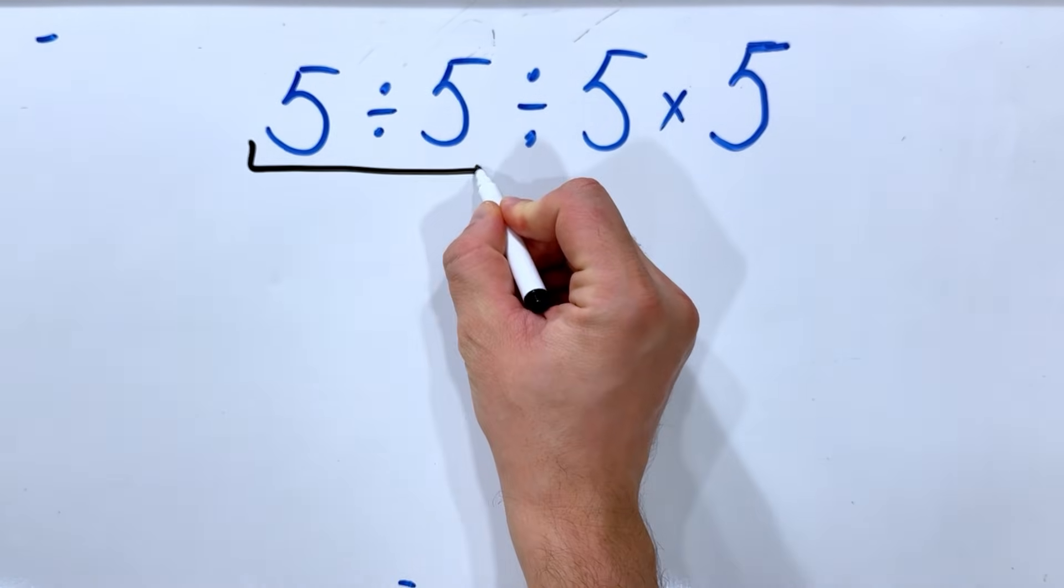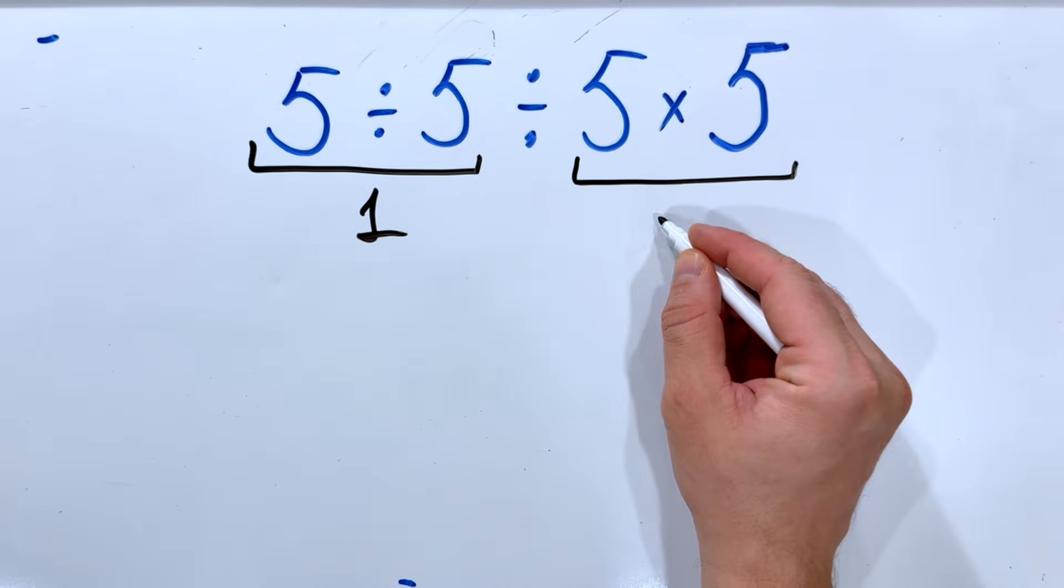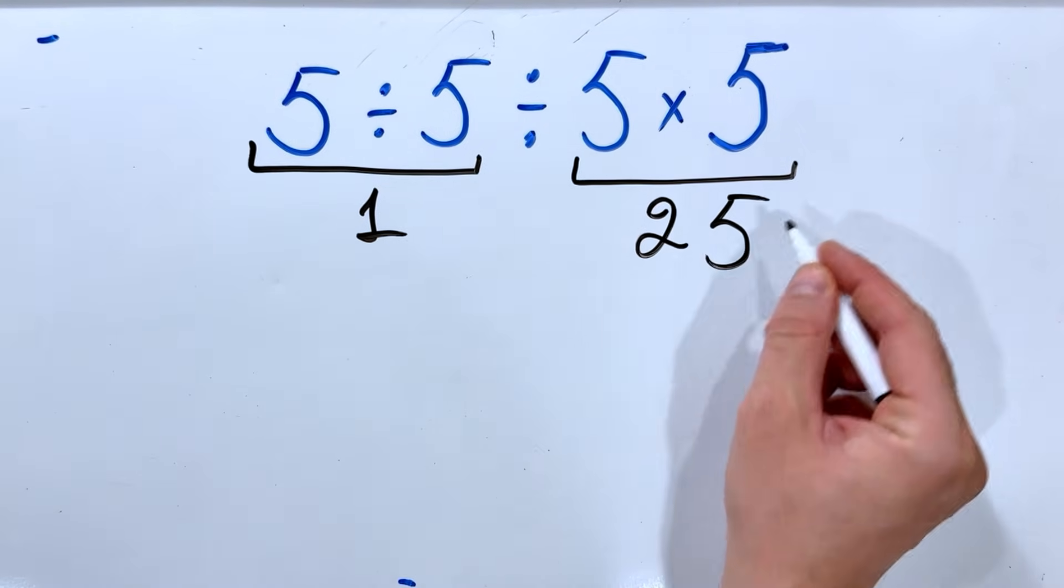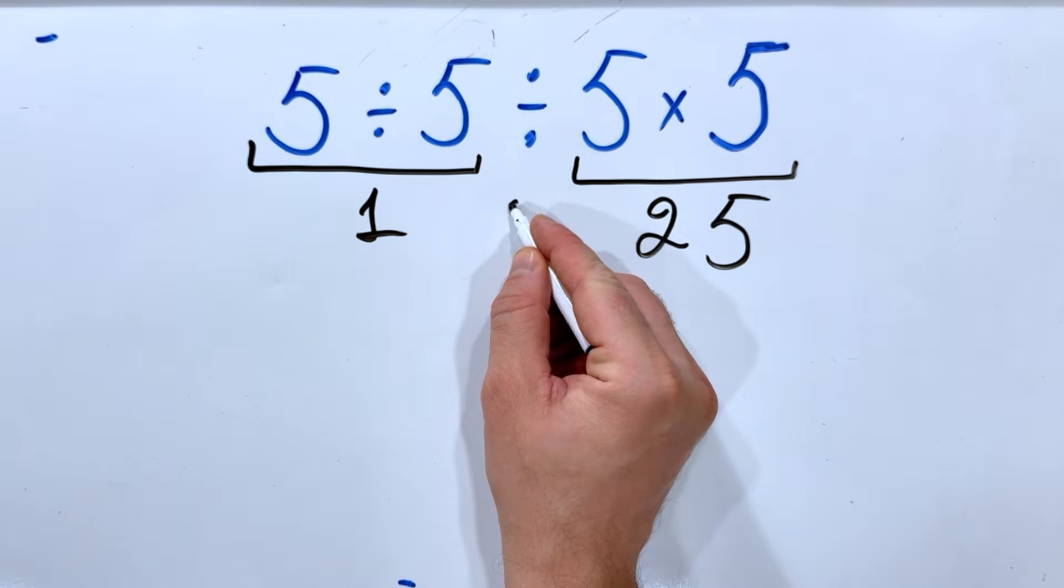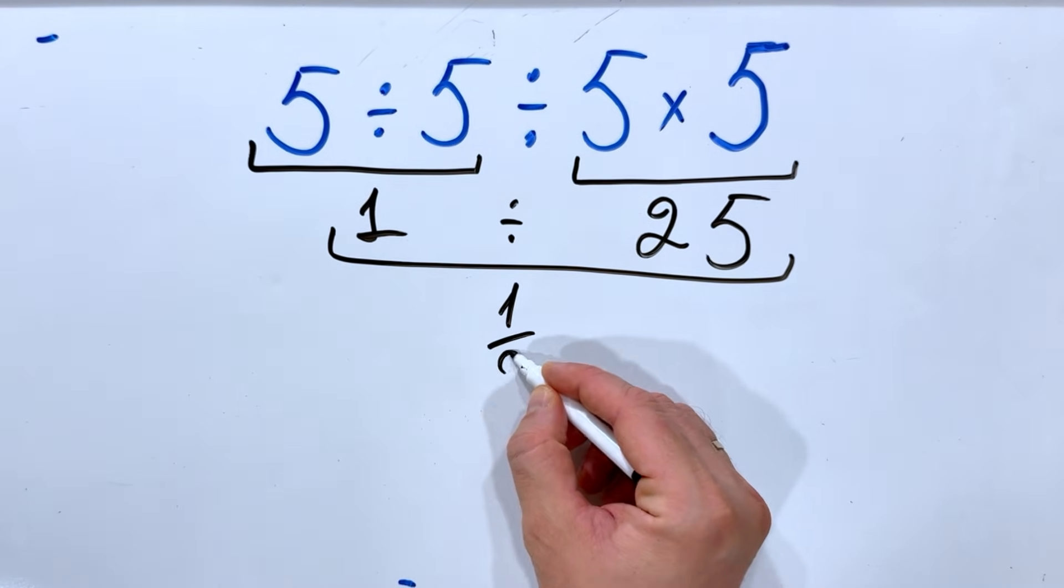5 divided by 5 is 1, 5 multiplied by 5 is 25, and 1 divided by 25 is 1 over 25.